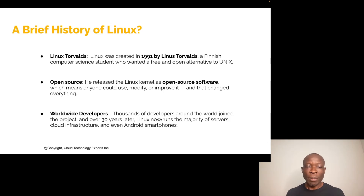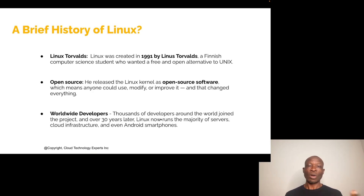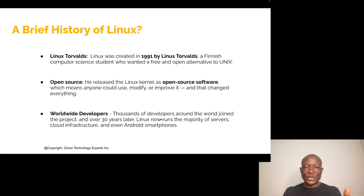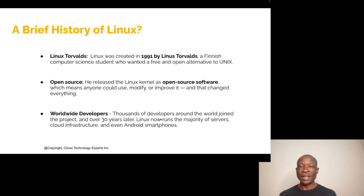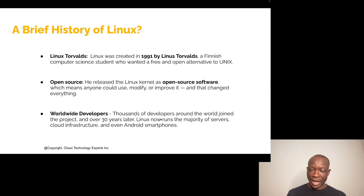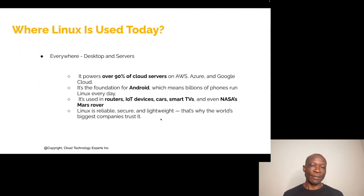Open-sourcing Linux was the one thing that changed how Linux became so popular. Because it was open, he was able to get developers from all over the world helping him build the project. When thousands of people from all over the world work on a single project, it's most likely going to be very good. So 30 years later — from 1991 to now — Linux runs on all servers and in cloud environments. Even Android phones are basically running Linux at the operating system level.